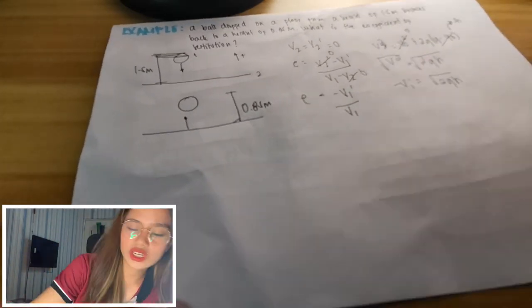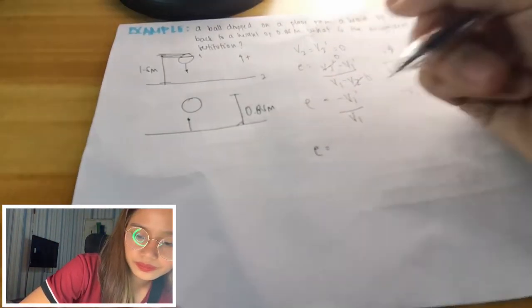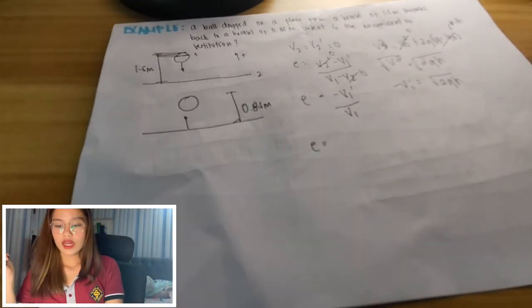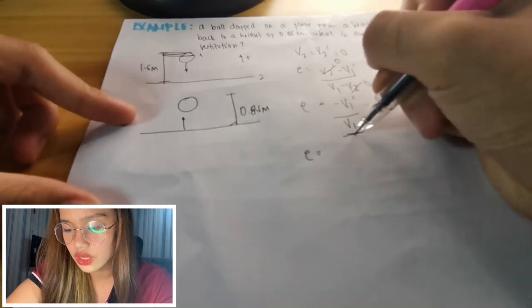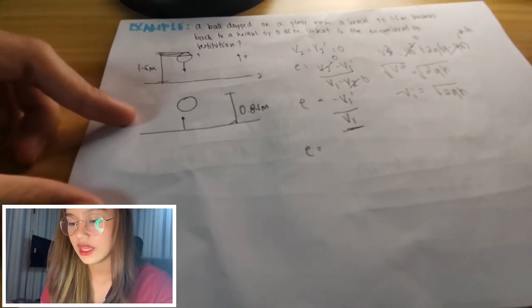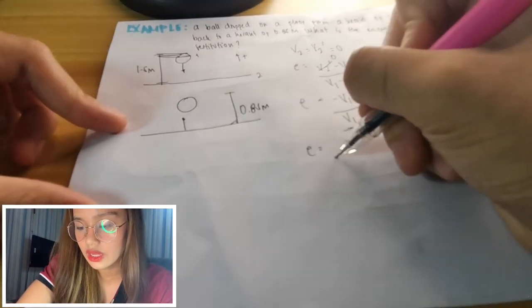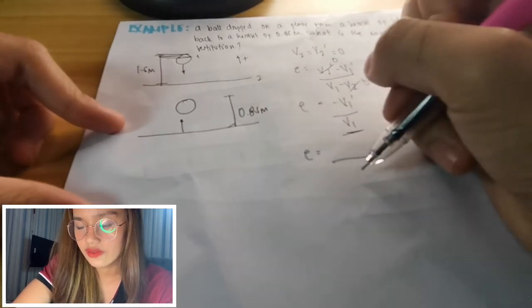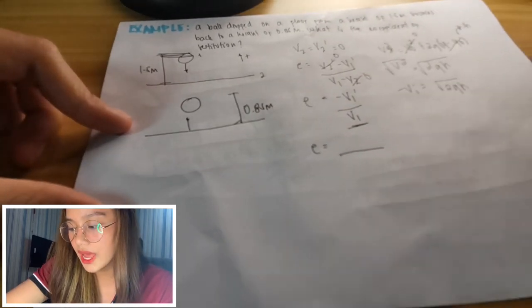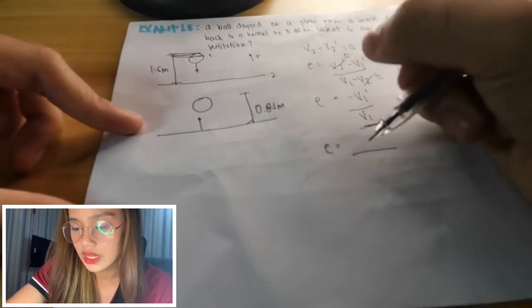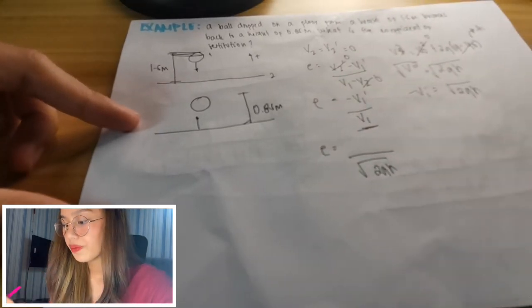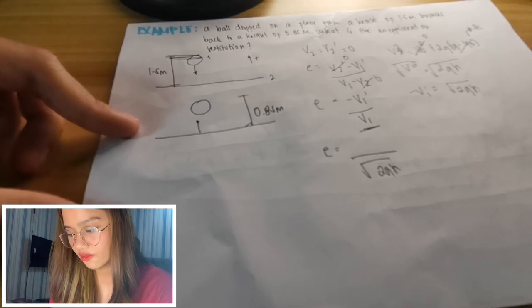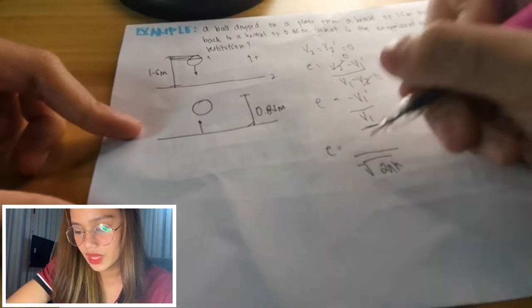So this is it guys. This is it, this one. Our v₁. So let's just put it below. So it becomes negative v₁. Okay, so this is it. Square root of 2gh. Negative.